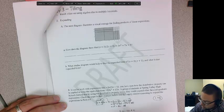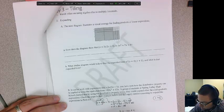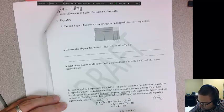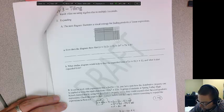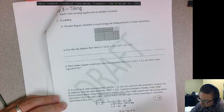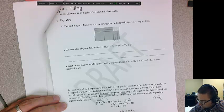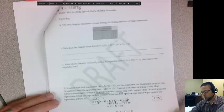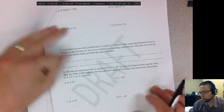So go ahead and do the same idea. Distribute twice, x plus 5 times x and then x plus 5 times 6. And then we distribute it back. So x squared plus 5x and then distribute it back, 6x plus 36. And then combine like terms. So I did the first one for you and you will do these others after that.